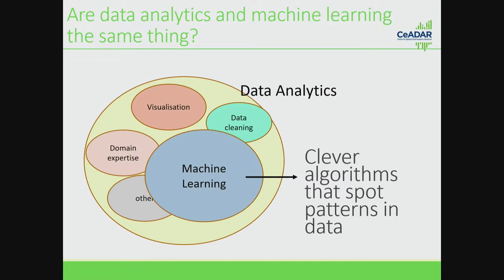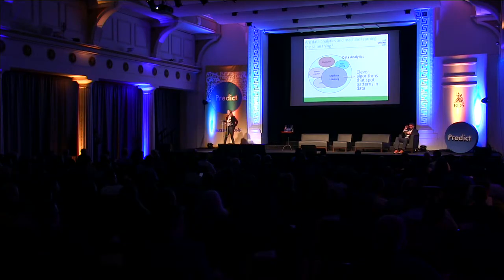There are other areas within data analytics, such as data cleaning — you need to have good data. Visualization is absolutely key, whereby you have good visualization to see what you're actually telling your users. Domain expertise — the ability of domain experts to be involved who know about the data — and various other areas. But machine learning itself, which is a major area within it, boils down to clever algorithms that spot patterns in data.